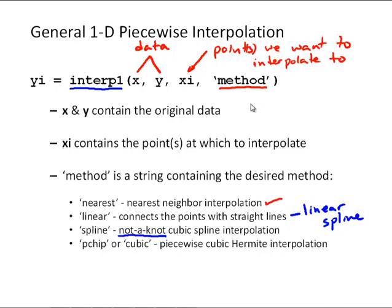And then the last option is this thing called piecewise cubic hermite interpolation. And this is basically a modified cubic spline, and I'll show you what that does here in a second.